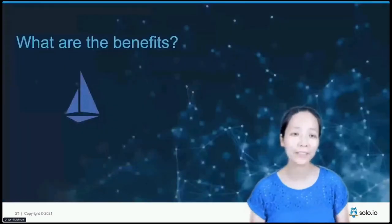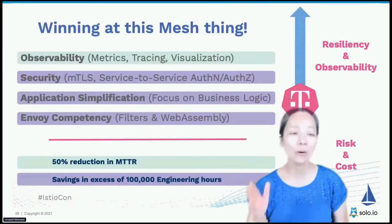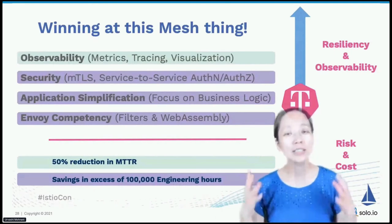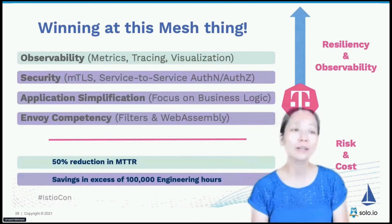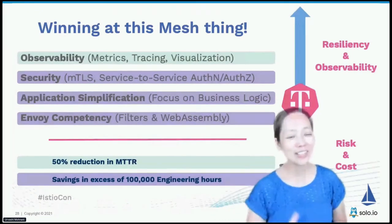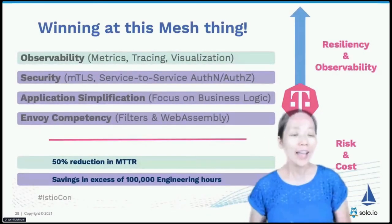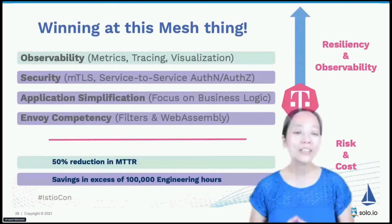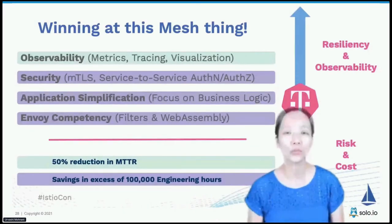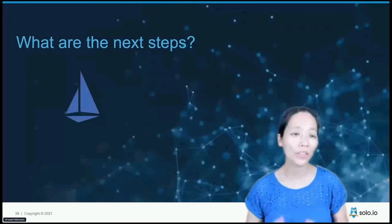What are the benefits? I'm reusing slides from our friends at T-Mobile — it's much easier to see benefits from a user than from someone who works on the project. They reported a 50% reduction in MTTR, and most importantly, savings of engineering effort worth over $100K. That is huge. T-Mobile has about 100 clusters running Istio in production.